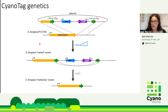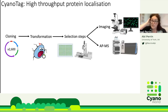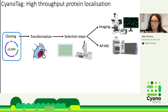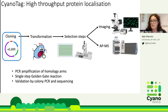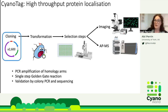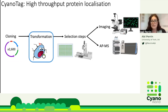This second recombination event removes the markers and leaves what we call a markless mutant — a scarless introduction of tags onto the gene of interest without selectable markers, which means we can recycle them to further modify other genes in the organism. For cloning, we use genomic DNA and PCR reactions to amplify homology arms corresponding to the five-prime end of the gene and the three-prime region, then use a single-step Golden Gate reaction to clone these homology arms into our cloning vectors, and validate by colony PCR and Sanger sequencing.